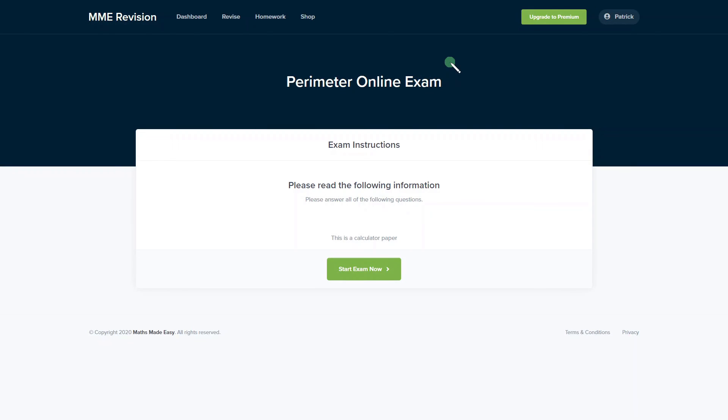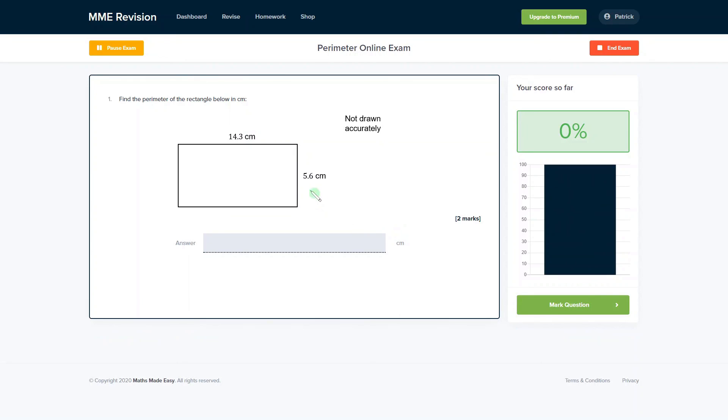So if you found this video useful and you'd like to practice some perimeter based exam style questions, why not visit our online exam, which you can find through our revision platform. If you take the exam, you'll find a variety of different question types, plenty of questions to practice, and you'll get instant feedback on each and every one of them, which will allow you to keep track of the areas that you need to improve. So if you're interested, click the link below. It will take you straight there.